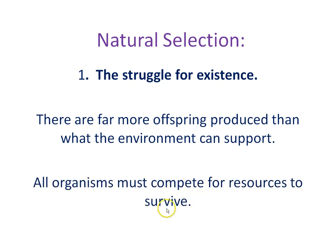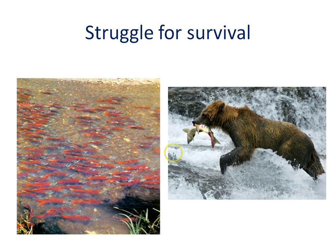All organisms must compete for resources to survive. In human societies, we've tried to avoid this struggle by increasing our resource base — adding farms and making acquisition of food much easier. Other animals, plants, and organisms don't have that option. Not every salmon makes it upstream to spawn; selection favors the faster swimmers and the ones that can blend in or avoid predators.